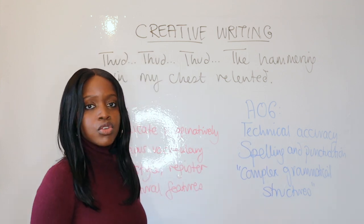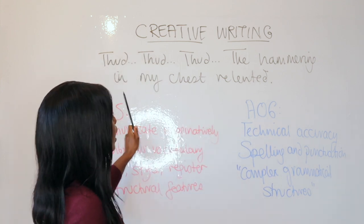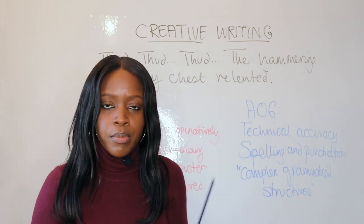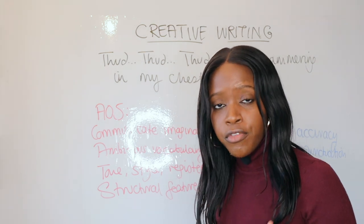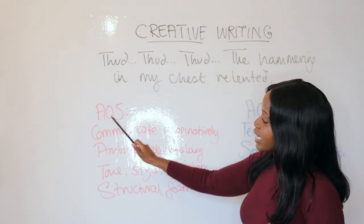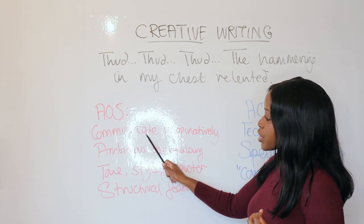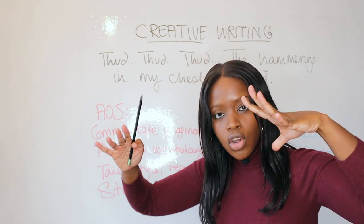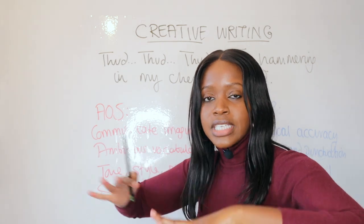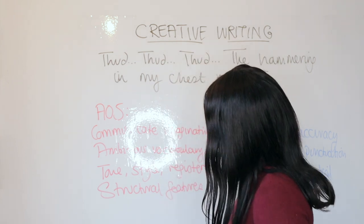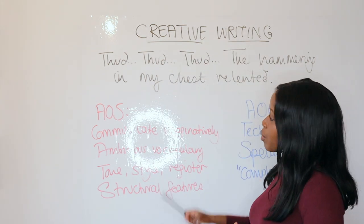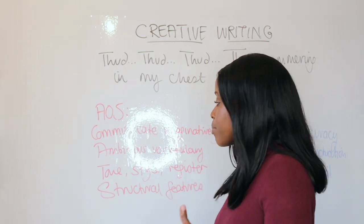Let me walk you through why this is such a powerful grade nine phrase. Number one, it hits the AO5. Firstly, you're communicating imaginatively — you're showing that your protagonist is now starting to slow down, the threat is somehow being resolved, and that tension is going down, doing so imaginatively. Equally, there's ambitious vocabulary: the word "relented" is really powerful ambitious vocabulary.